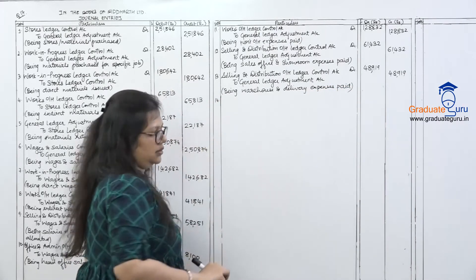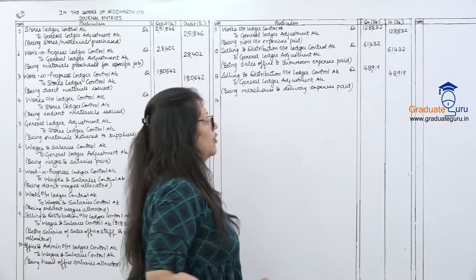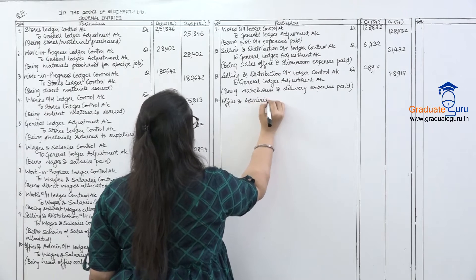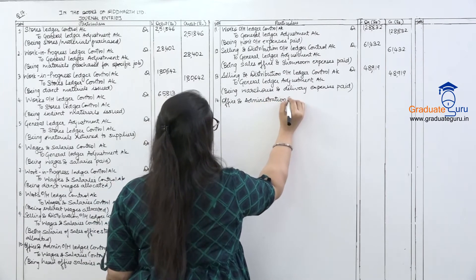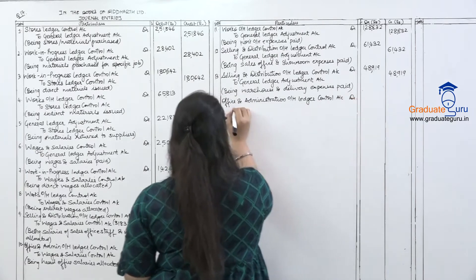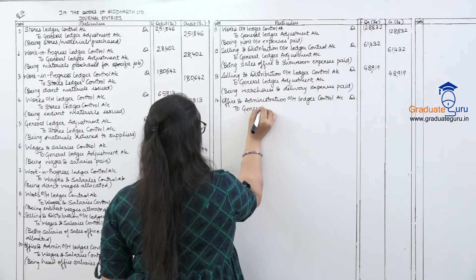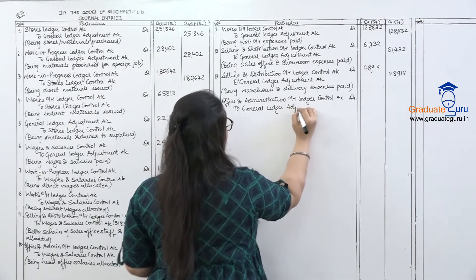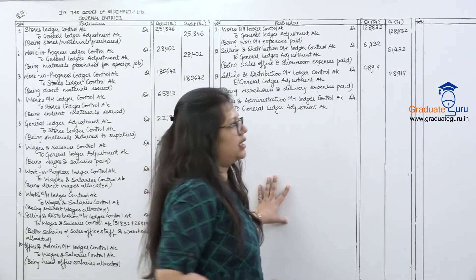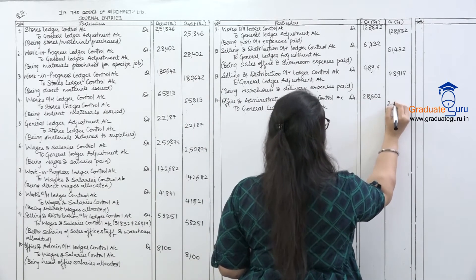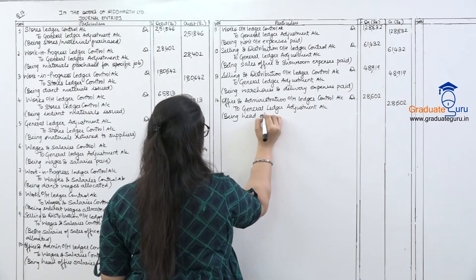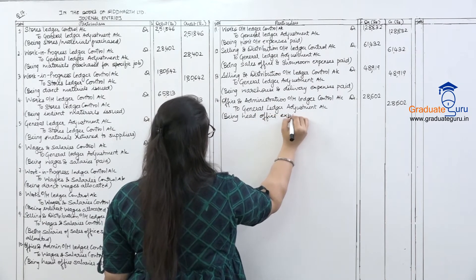Entry number 14: head office expenses go to office and administration overhead. Journal entry: Office and Administration Overhead Ledger Control Account debit, to General Ledger Adjustment Account. Amount: 28,602. Narration: being head office expenses paid.